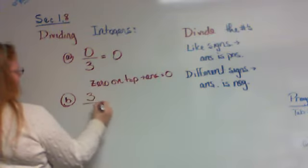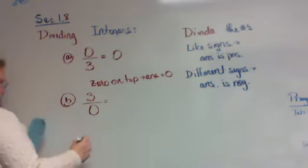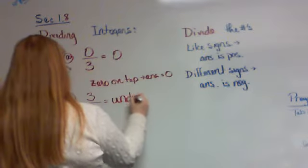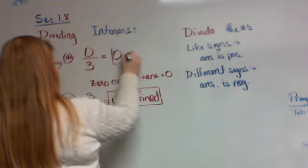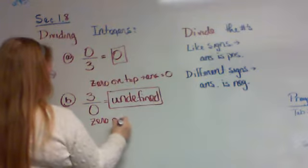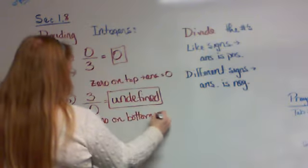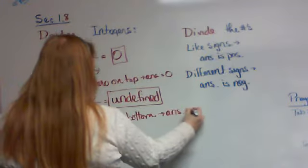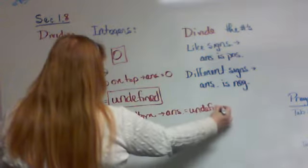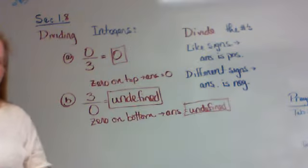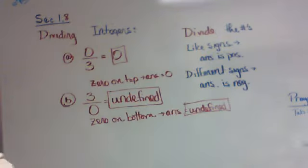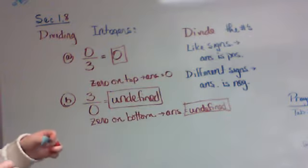But when you have any number divided by zero, your answer is undefined. Zero on bottom is bad stuff, it's against the law. So it means your answer has to equal undefined. You actually write it out and everything. It's because there's no definition for having a zero on the bottom. That's why we call it undefined.